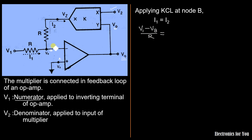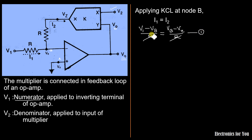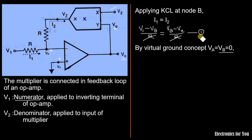I2 equals (Vb minus Vz) upon R. Since R cancels on both sides, we get V1 minus Vb equals Vb minus Vz — call this equation number one. Applying the virtual ground concept, since it is an inverting amplifier, Va equals Vb equals zero. Substituting Vb equals zero into equation number one, we get V1 equals minus Vz.